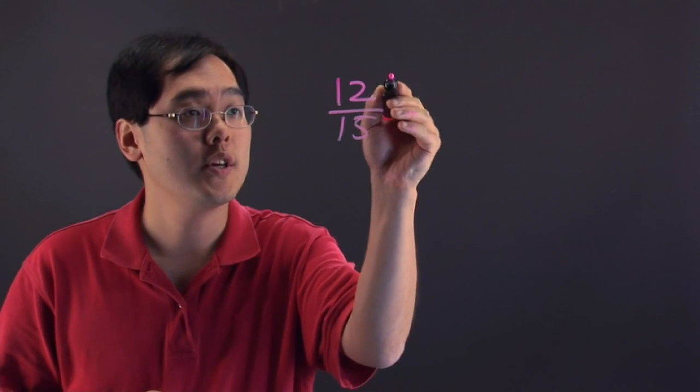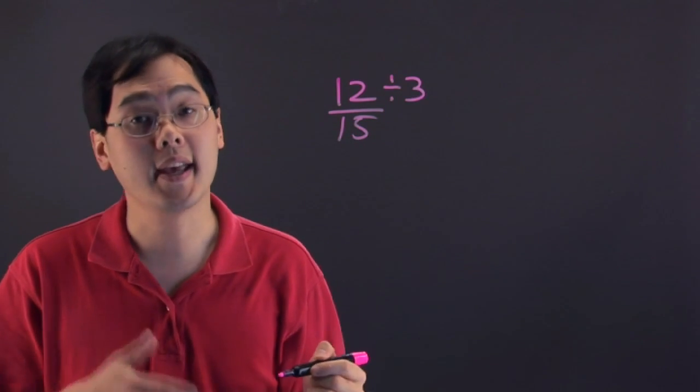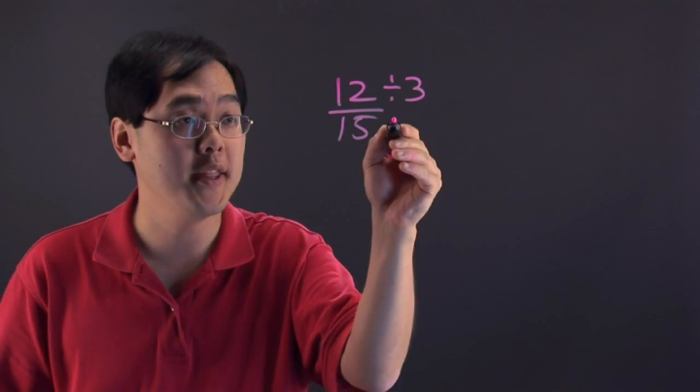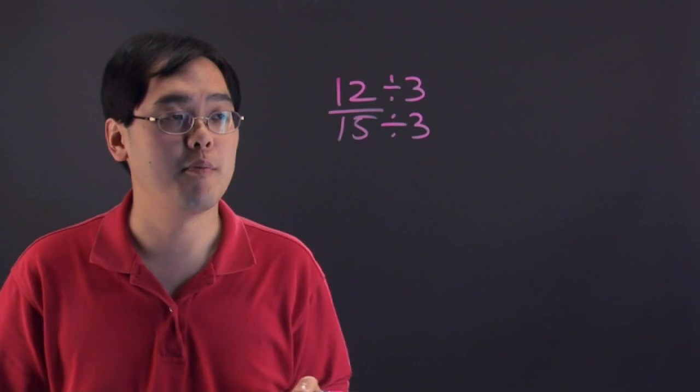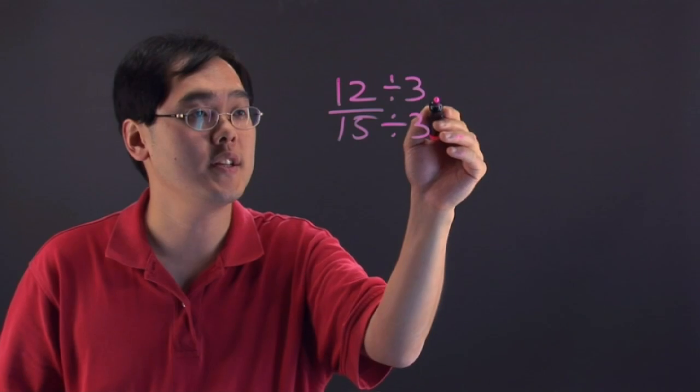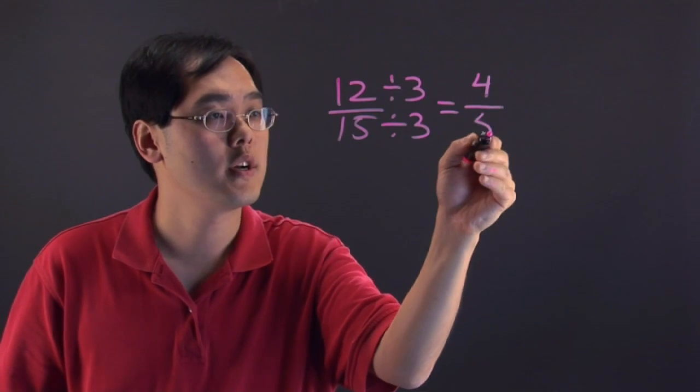So, what you want to do is divide the numerator by 3, but again, you've got to do it to both the top and the bottom. So, divide the denominator by 3 as well. And so, 12 fifteenths is going to equal 4 over 5.